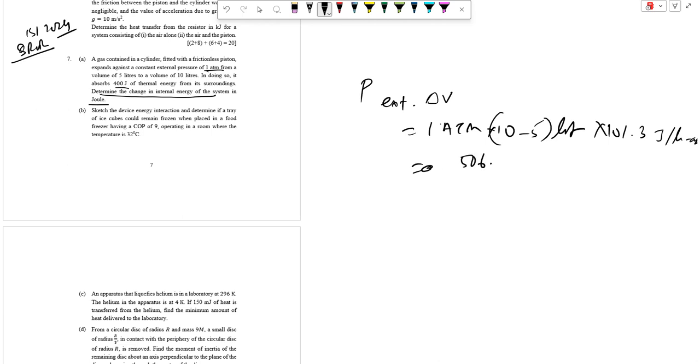This will give you 506.5 joules. The change of internal energy system is Q minus W that is 400 minus 506.5 that is minus 106.5 joules.